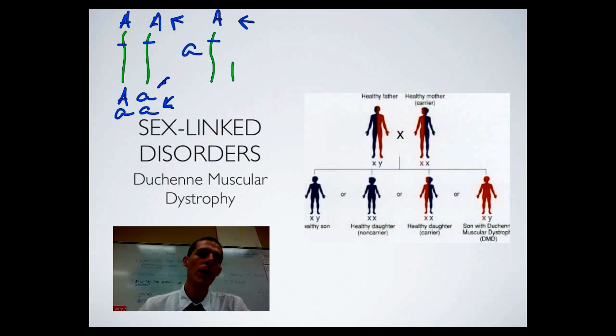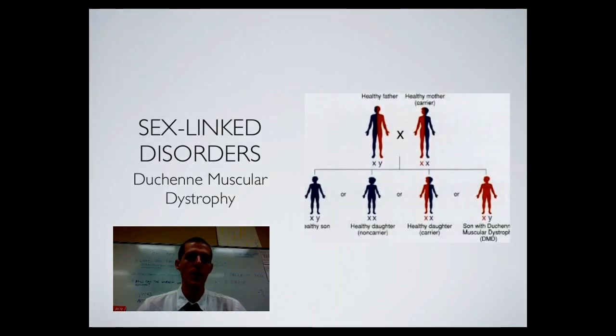And obviously, because any daughters produced get two Xs, they'd probably be okay. But any guy produced, that X chromosome is going to come from mom. So it's very likely that a boy could get it. Now, recognize with sex-linked disorders, they are generally going to be passed from mother to son. It is possible for daughters to get them, but it's much more likely to go mother to son.